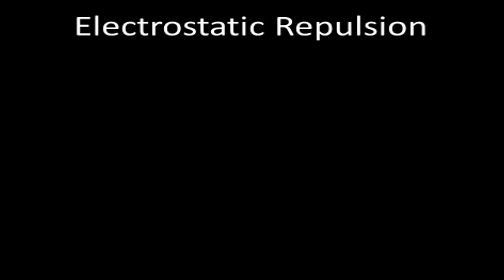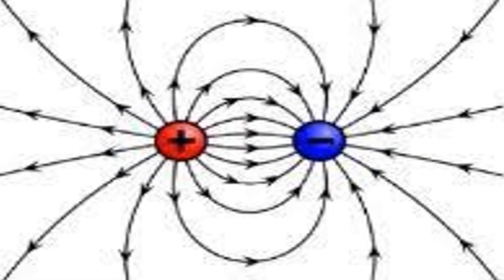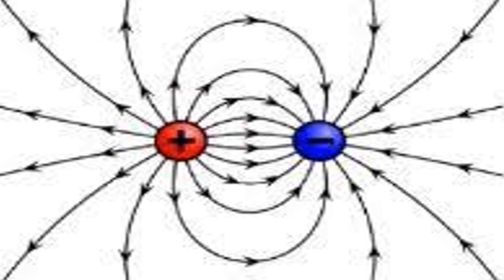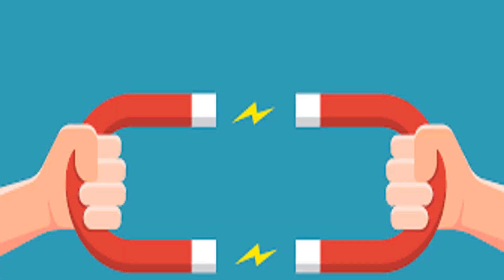It was known that charge was of two kinds, positive and negative. The knowledge of the existence of magnetic forces and their ability to interact with charged particles was also available to scientists at the time.